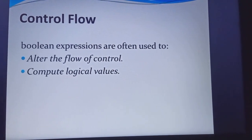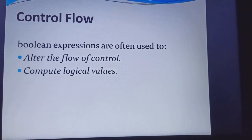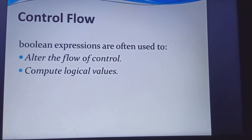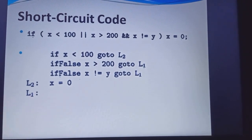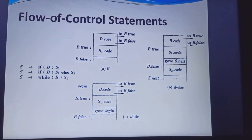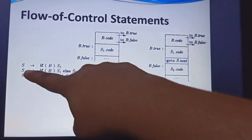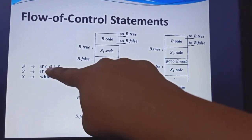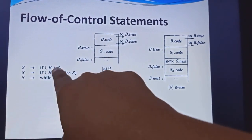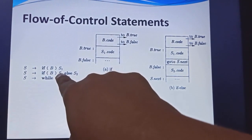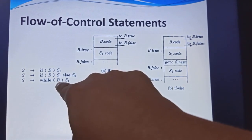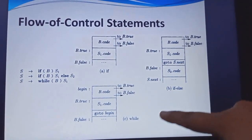Next is control flow. In control flow we have two types of computations: flow of control and computing logical values. The short circuit code and flow of control statements follow. S tends to if B: here B is the expression. If the expression is true, we represent a statement. Another case is if-else: if expression is true then S1 is written, else S2 is written. This is the while case: while expression, then statement. Likewise, they construct if, if-else, and while.